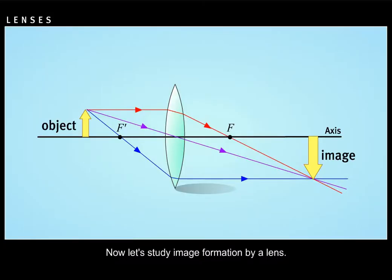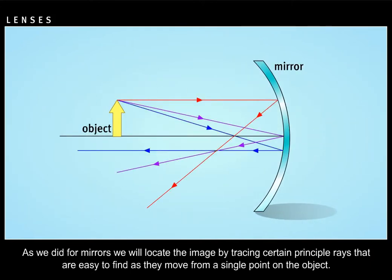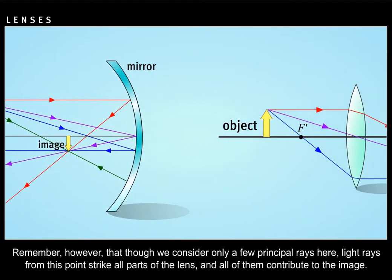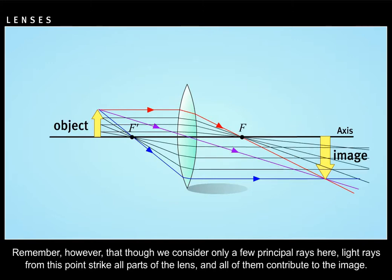Now let's study image formation by a lens. As we did for mirrors, we will locate the image by tracing certain principal rays that are easy to find as they move from a single point on the object. Remember, however, that though we consider only a few principal rays here, light rays from this point strike all parts of the lens and all of them contribute to the image.